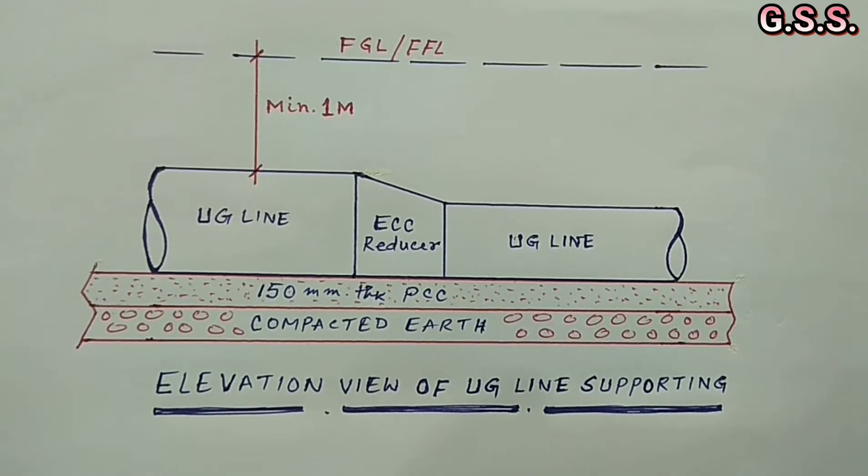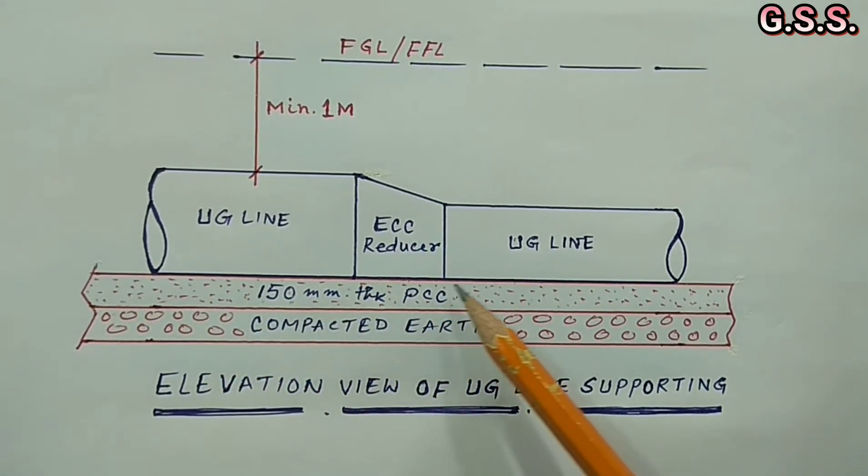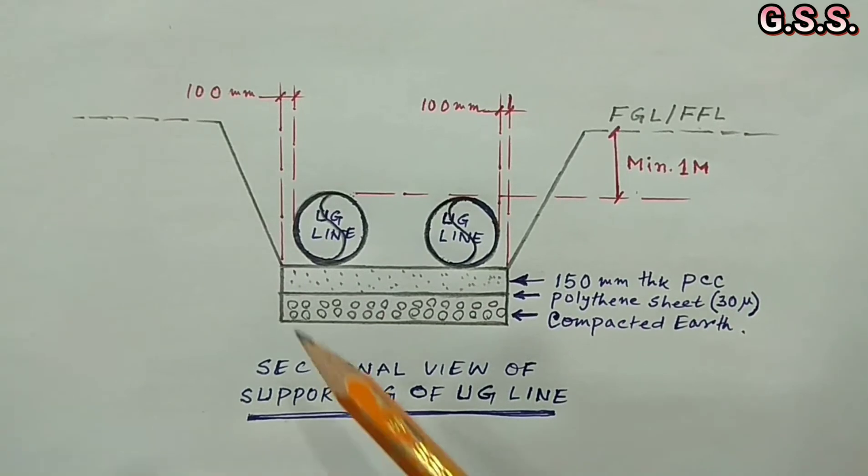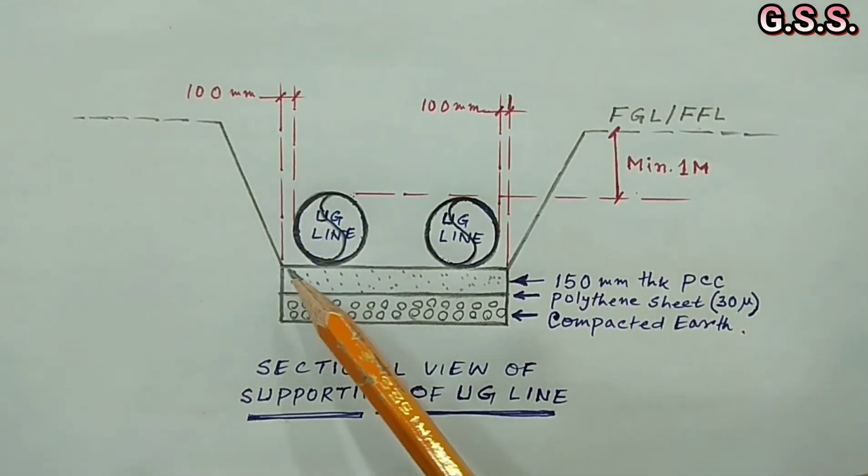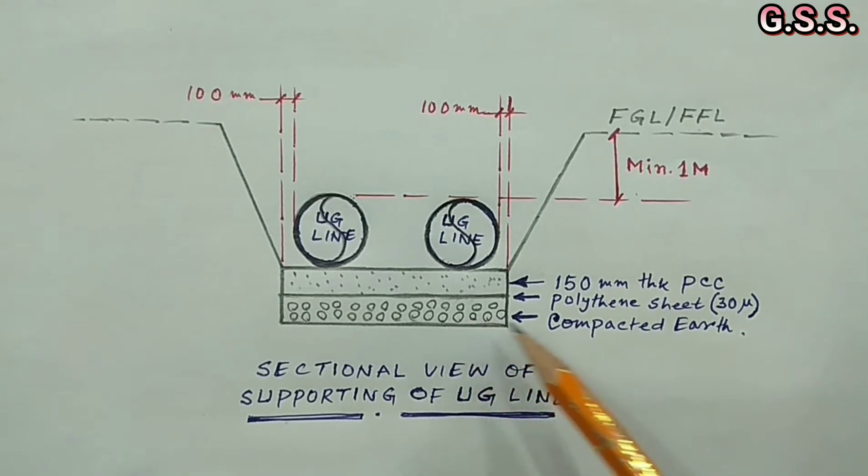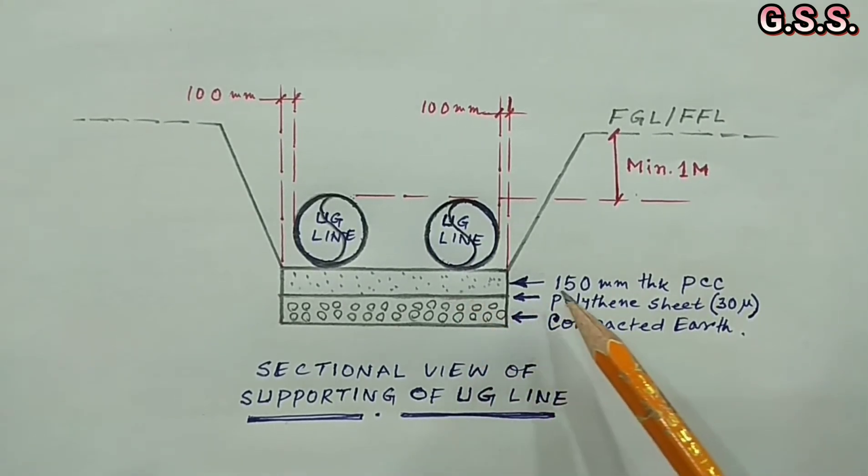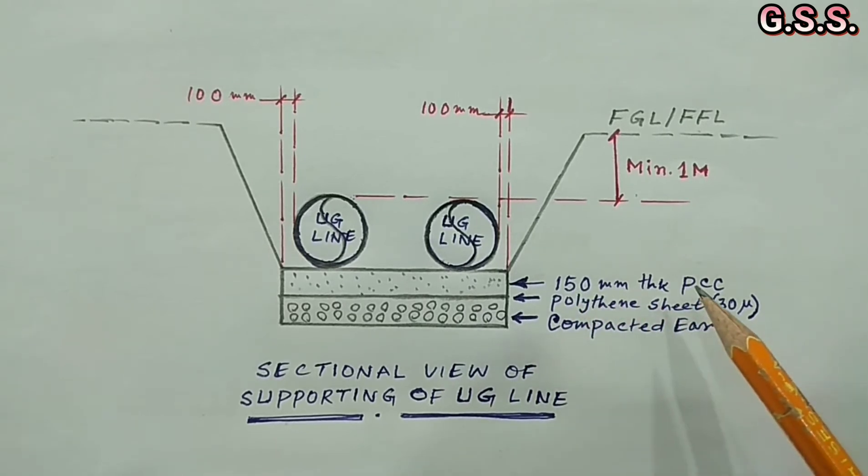Buried underground line is provided with continuous support at pipe bottom along the length of the pipe. First, earth is excavated like V-shape, then soil of bottom bed is compacted, then 150mm thick PCC is done along the pipe length.